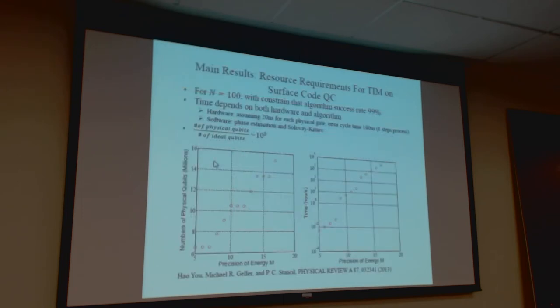What I haven't listed here is that this also has some relevant properties. We are going to talk about this. The main results — actually this is kind of old compared with Austin's new work. Our work is from 2013. We give some main results: our resource requirements for the transverse IC model, implementing our approach. The time is dependent on, as I said, both the hardware and software parameters.